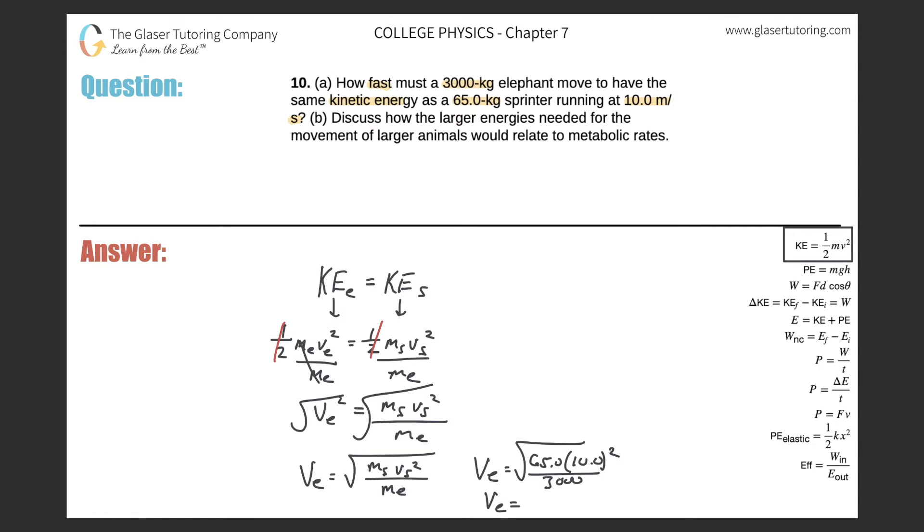So we now know that the velocity of the elephant needs to be square root of 65 times 10 squared, all divided by 3,000. 1.47 meters per second.